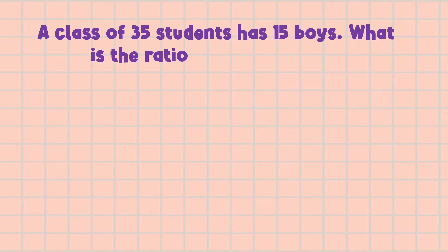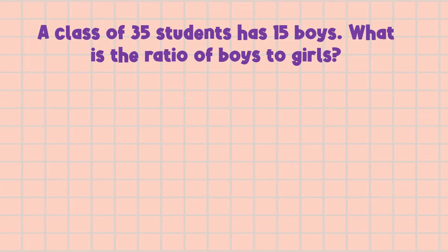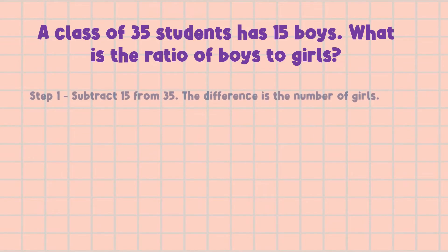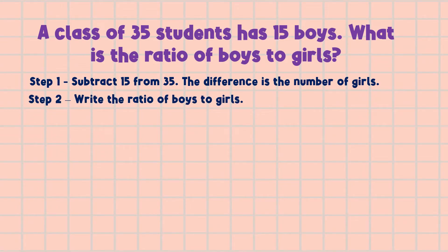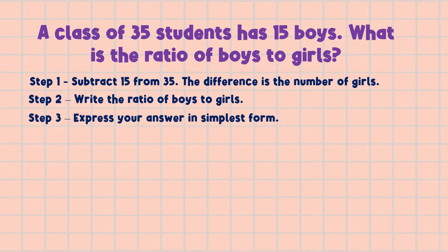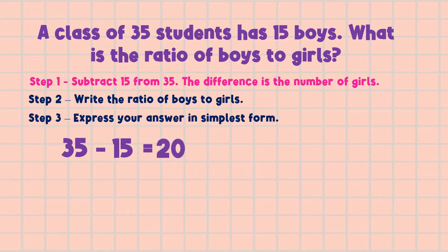Another example: A class of 35 students has 15 boys. What is the ratio of boys to girls? There are 35 students in the class and 15 boys, but we need to find how many girls there are. For Step 1, we subtract 15 from 35 — the difference is the number of girls. So 35 minus 15 equals 20. There are 20 girls in the class.